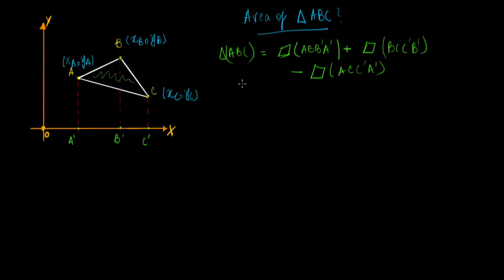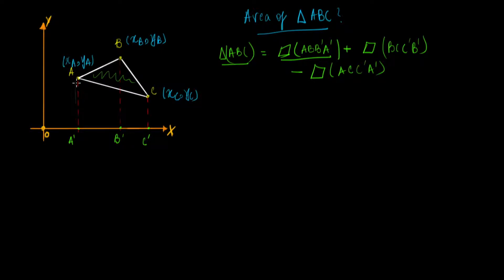If we have such a relation and are able to calculate the areas of the quadrilaterals ABB'A', BCC'B', and ACC'A', then we can subtract and add certain amounts of them to get the area of the triangle. The area of ABC is enclosed within the bigger areas defined by those quadrilaterals. If we add quadrilateral ABB'A' and BCC'B', we get a total area that includes the area of the triangle, but it also has an extra area of ACC'A' that we must subtract to get the exact value.